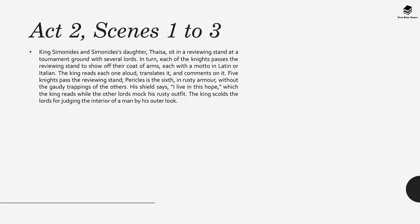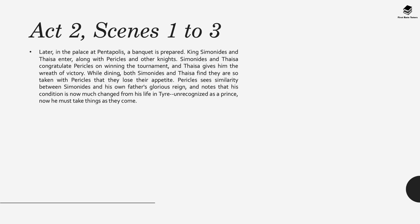In Act 2, Scenes 1–3, King Simonides and his daughter Thaisa sit in a reviewing stand at a tournament ground with several lords. Each knight passes in turn to show off their coat of arms, each with a motto in Latin or Italian. The king reads each one aloud, translates it, and comments on it. Five knights pass. Pericles arrives sixth in rusty armour without the gaudy trappings of the others. His shield reads 'I live in this hope.' The other lords mock his rusty outfit, but the king scolds them for judging a man's interior by his outer appearance.